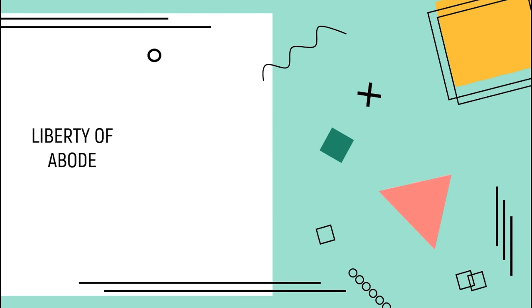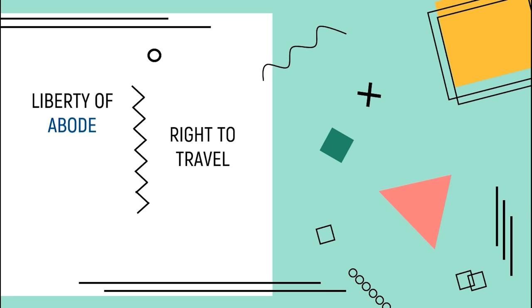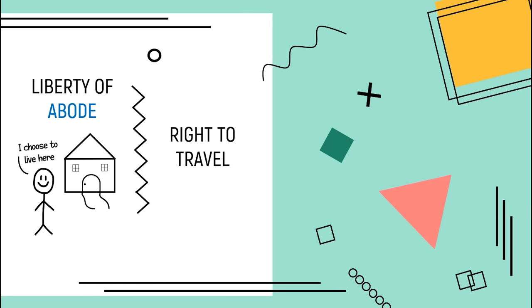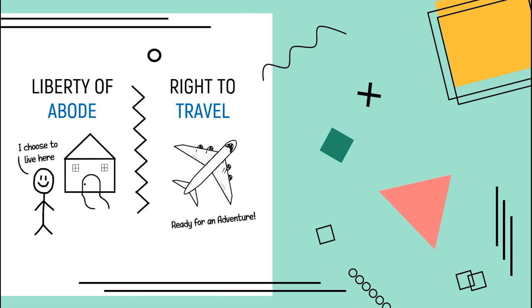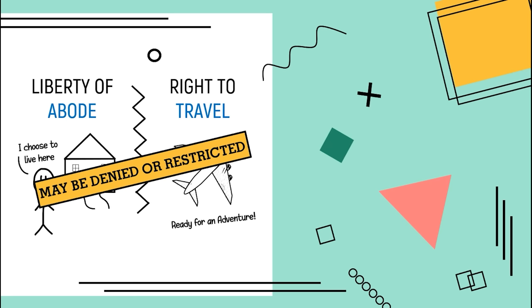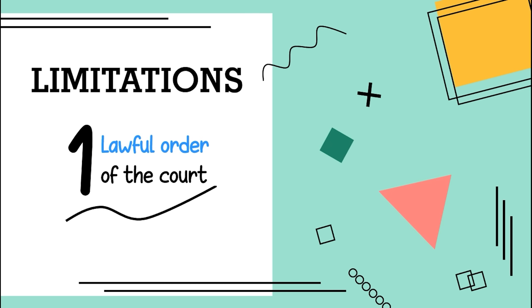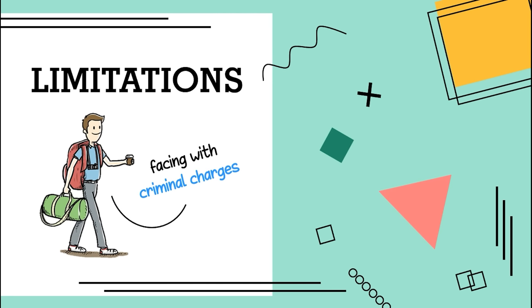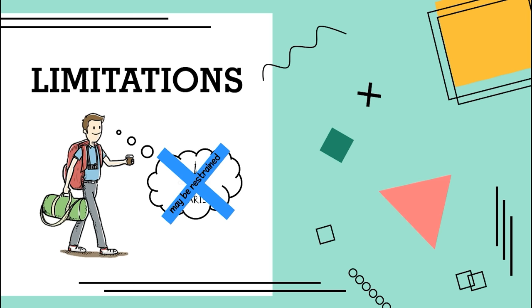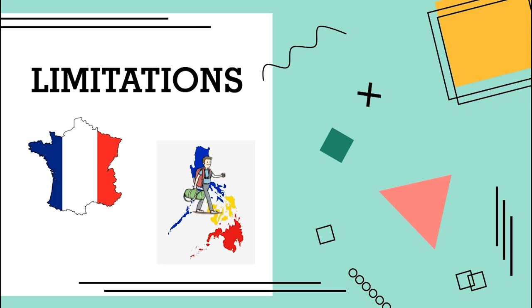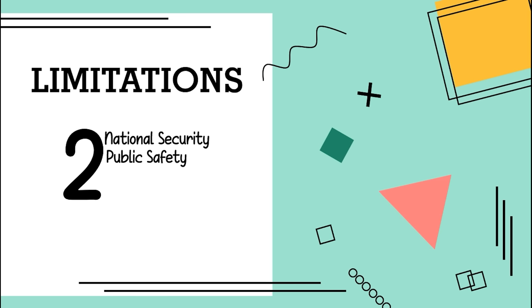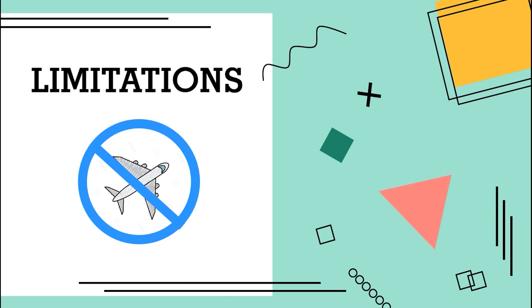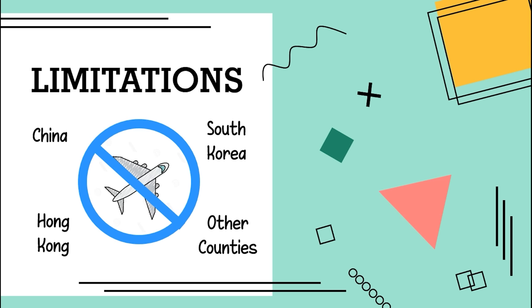Now let's talk about the liberty of abode and the right to travel. Liberty of abode is the right of a person to choose and change his residence without interference from the government. The right to travel is the right to go to different places. These rights may be restricted by the state if, first, there is a lawful order of the court — for example, Pedro is facing criminal charges and wants to go abroad; the court may restrain him from leaving the country. Second, if national security, public safety, or public health is in danger — for example, in March 2020, the Philippine government banned travel from China, South Korea, Hong Kong, and other nearby countries to stop the spread of COVID-19.